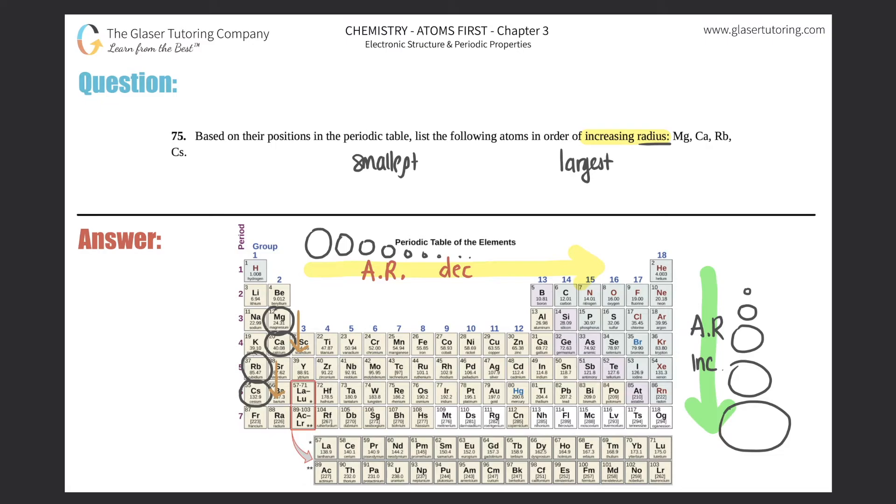So cesium would be the largest because it's the most down on the periodic table, and magnesium would be the smallest because it's the most up top.